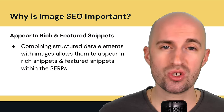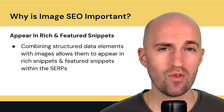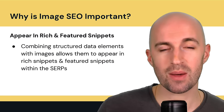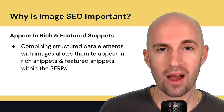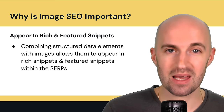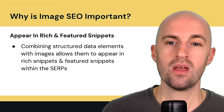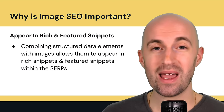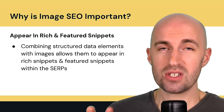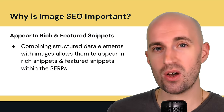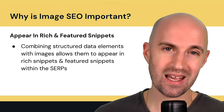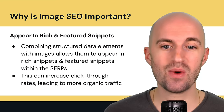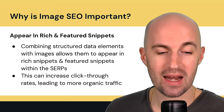Appear in rich and featured snippets: combining structured data elements with images allows them to appear in rich snippets and featured snippets within search engine results pages. You've probably seen little thumbnails or images in Google search results — those are pulled in using structured data elements. It makes results more engaging, and there's a high chance users click on those over a plain text result, increasing click-through rates and organic traffic.